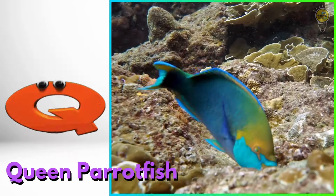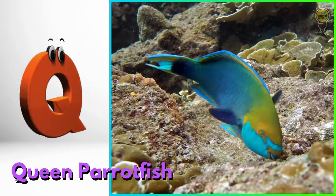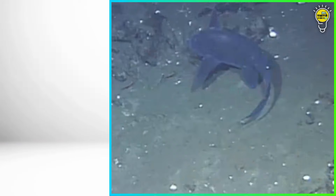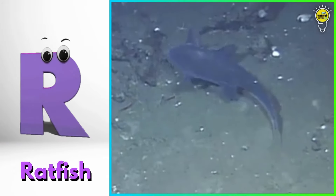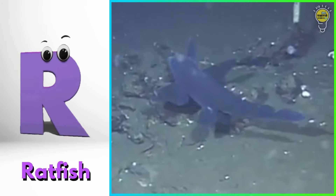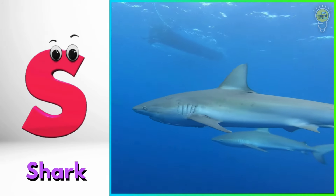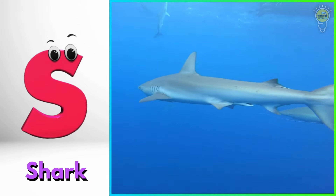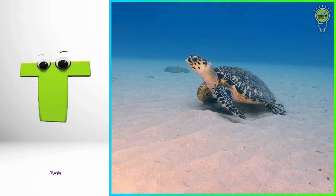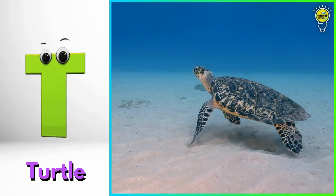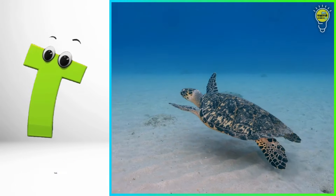Q is for queen parrotfish. Kuh, queen parrotfish. R is for ratfish. Pruh, ratfish. S is for shark. Suh, shark. T is for turtle. Tuh, turtle.